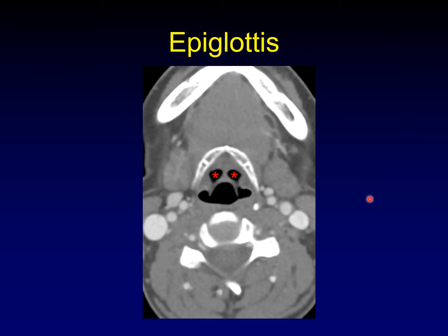Pop quiz: what air space is this with the red stars on it? We are anterior to the epiglottis — this is the anterior surface of the epiglottis — so that makes this the base of tongue. The hyoepiglottic ligament demarcates the two sides of the vallecula. Then out on either side of the epiglottis is where we send the food. The epiglottis divides the food into the two sides and sends it down to either side to go into the hypopharynx.